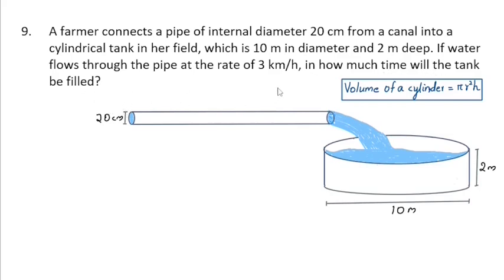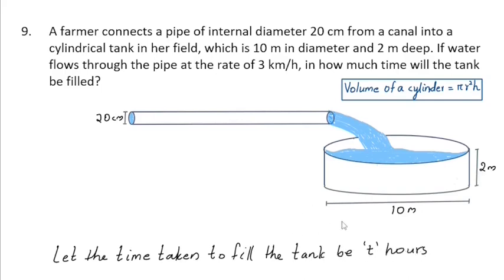Let's assume the tank will get filled in t hours. This is the cylindrical tank situated in the field. The diameter of the tank is 10 m, so the radius of the tank is 5 m. Its height is 2 m.